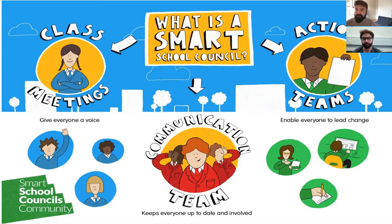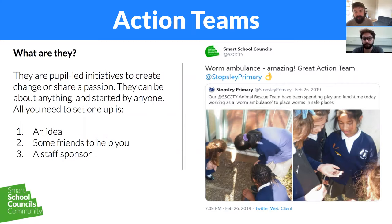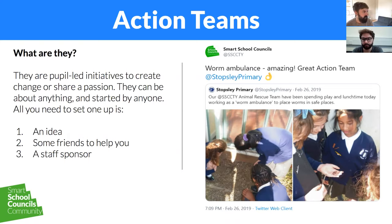It's useful to see where Action Teams sit as part of the Smart School Council model. We've got class meetings — short, regular, snappy meetings led by pupils about a big question. Then there are communication teams, the leadership group who pick the questions and help run the model. And then we come to Action Teams: they're open to anyone, and are the small groups of young people who will take forward and create change. They can run their own projects that can be big or small, permanent or short-term — they're really the active part of the Smart School Council model.